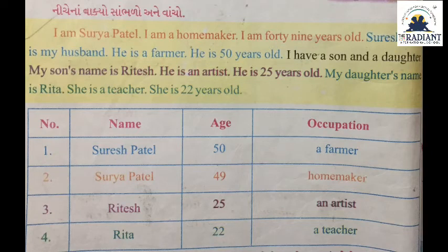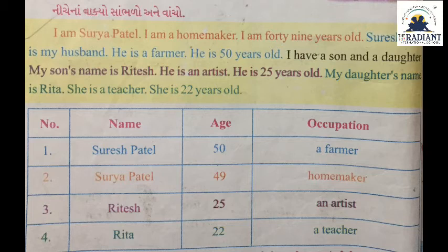નીચેના વાક્યો સાંભળો અને વાંચો: I am Surya Patil. I am a homemaker. I am 49 years old. Suresh Patil is my husband. He is a farmer. He is 50 years old. I have a son and a daughter. My son's name is Ritesh. He is an artist. He is 25 years old. My daughter's name is Rita. She is a teacher. She is 22 years old.